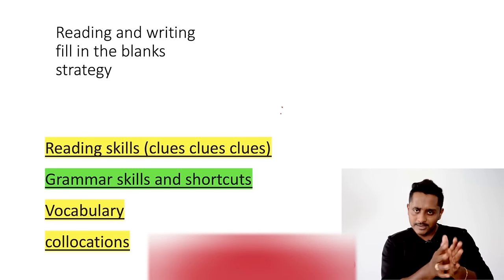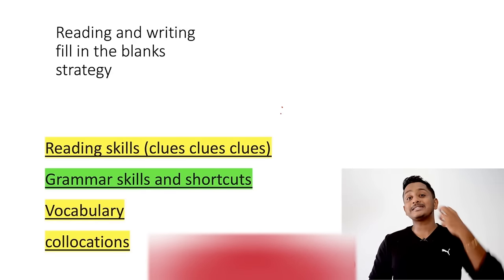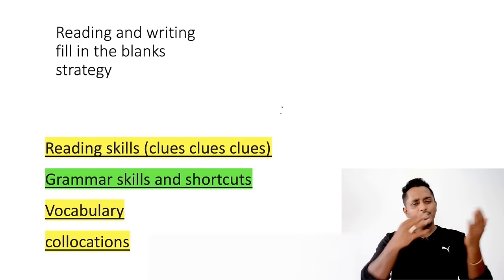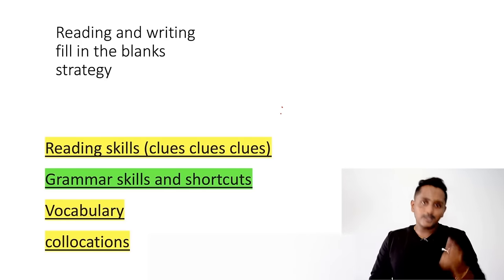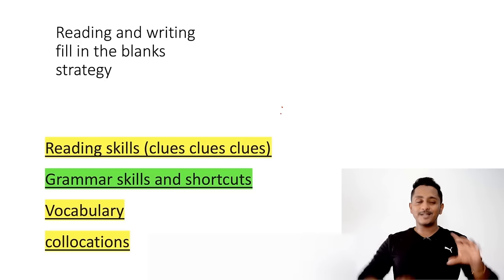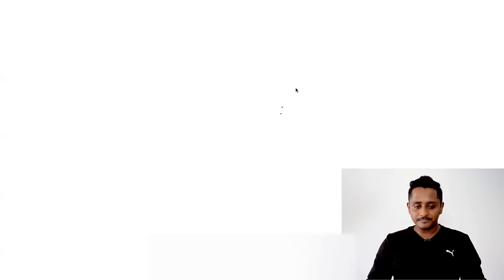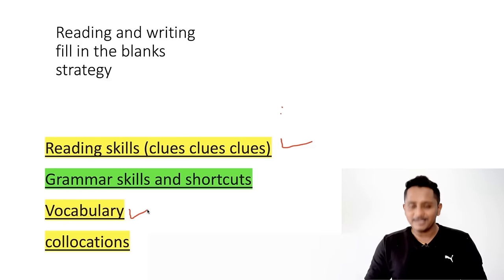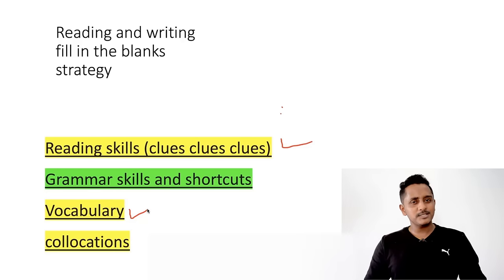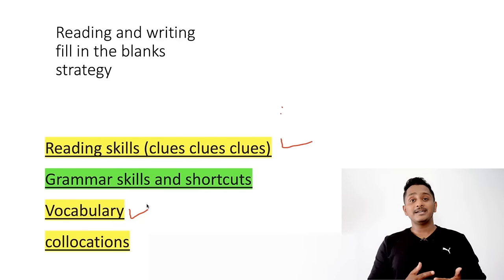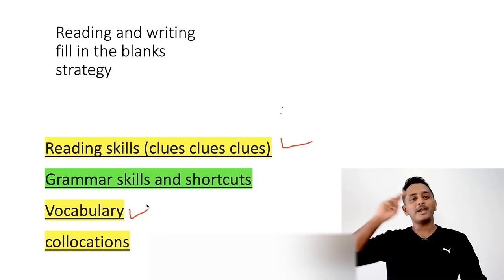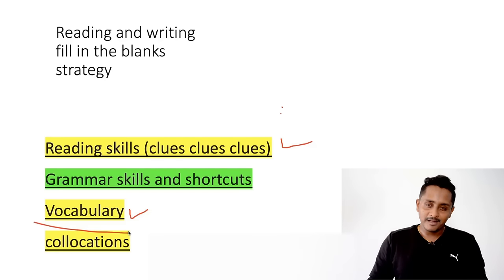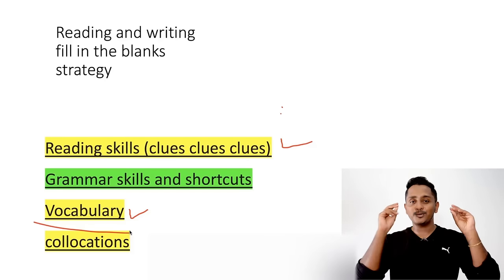I've summed all the strategies into four areas. First is reading skills: when your skills are good you understand the context and find clues, and based on those clues you find the answer. Second is vocabulary — it plays a major role because if you don't know the meaning of words you won't understand the context and you'll go with the wrong answer. Today we'll discuss more than 30 to 40 words.